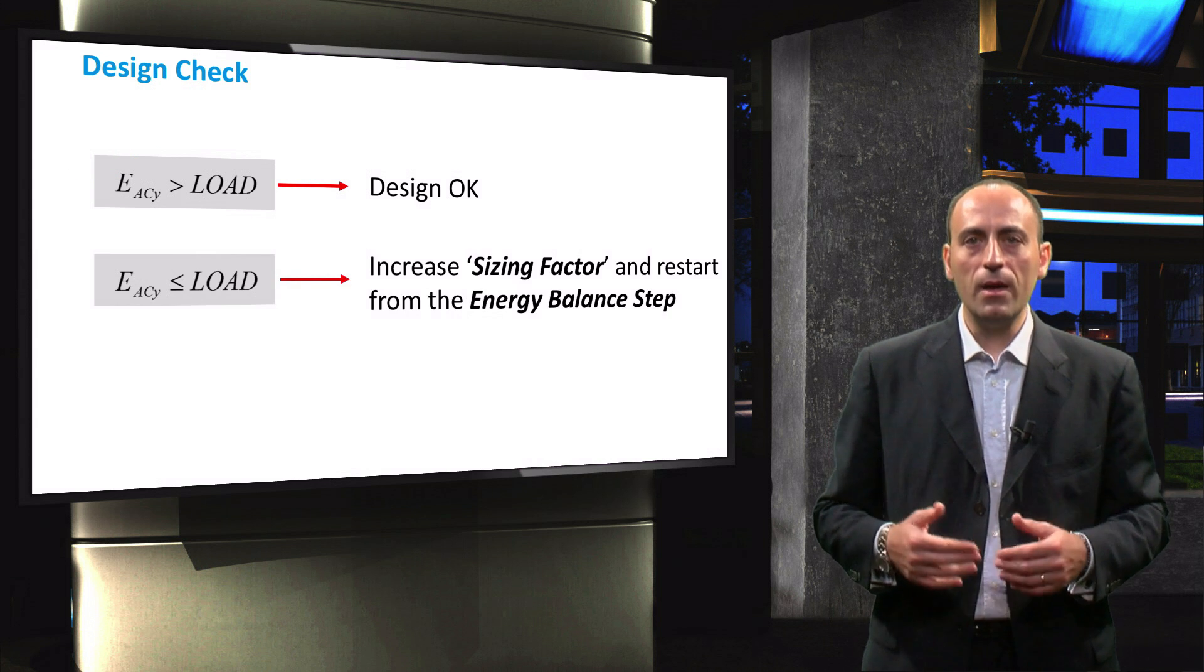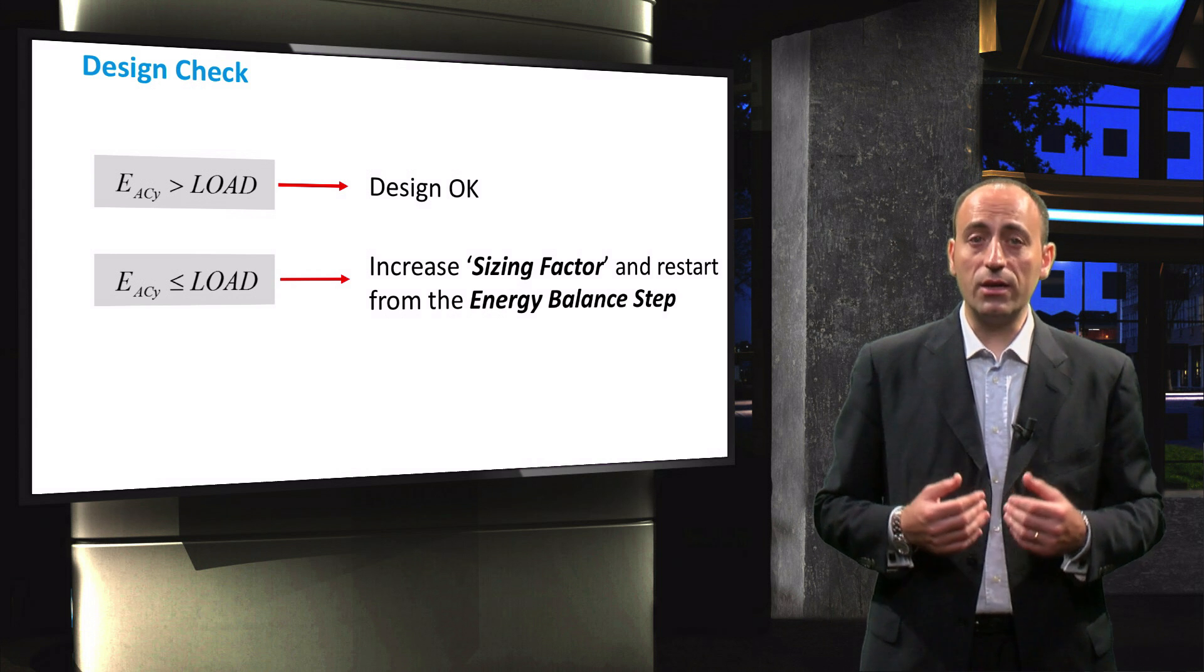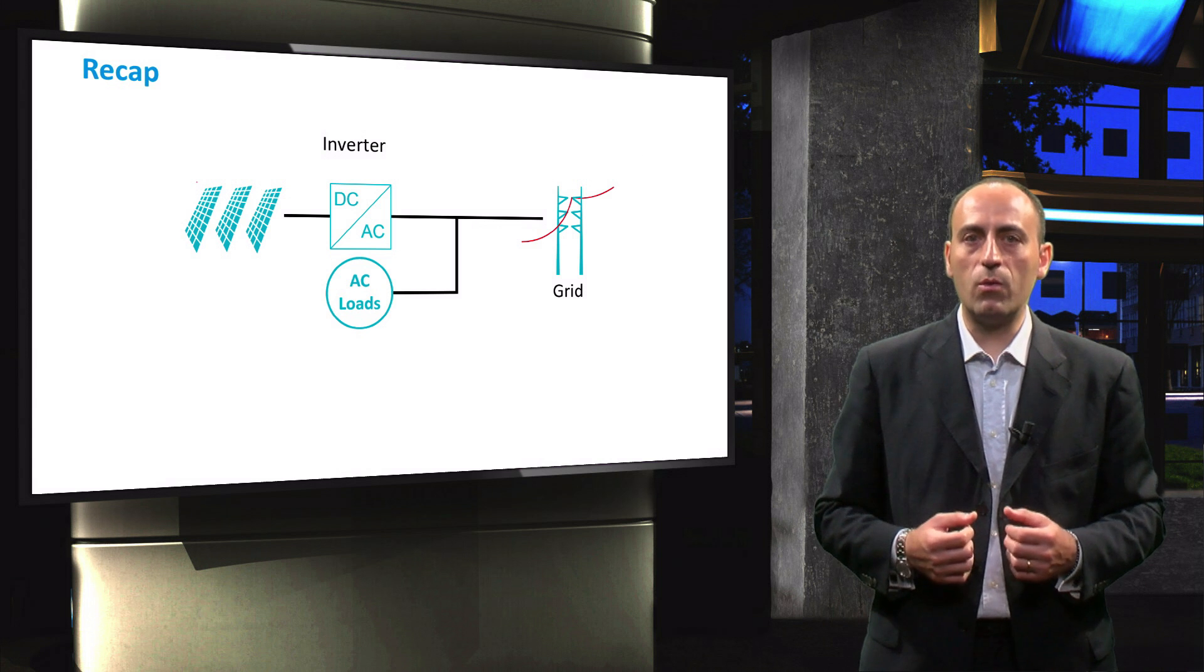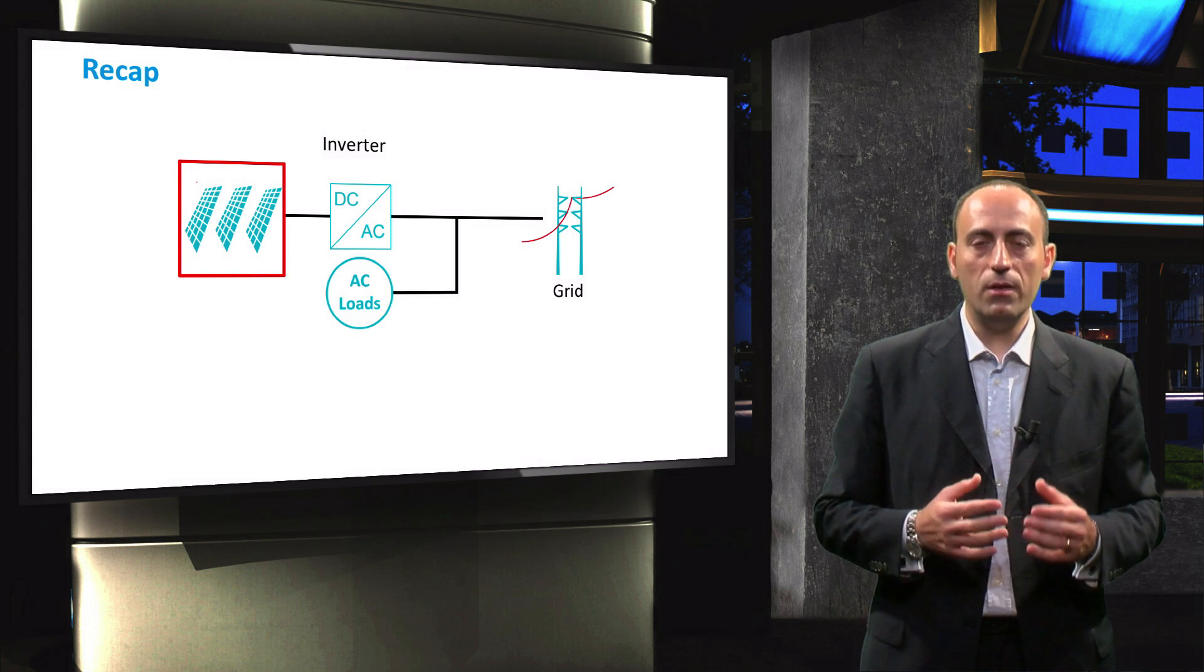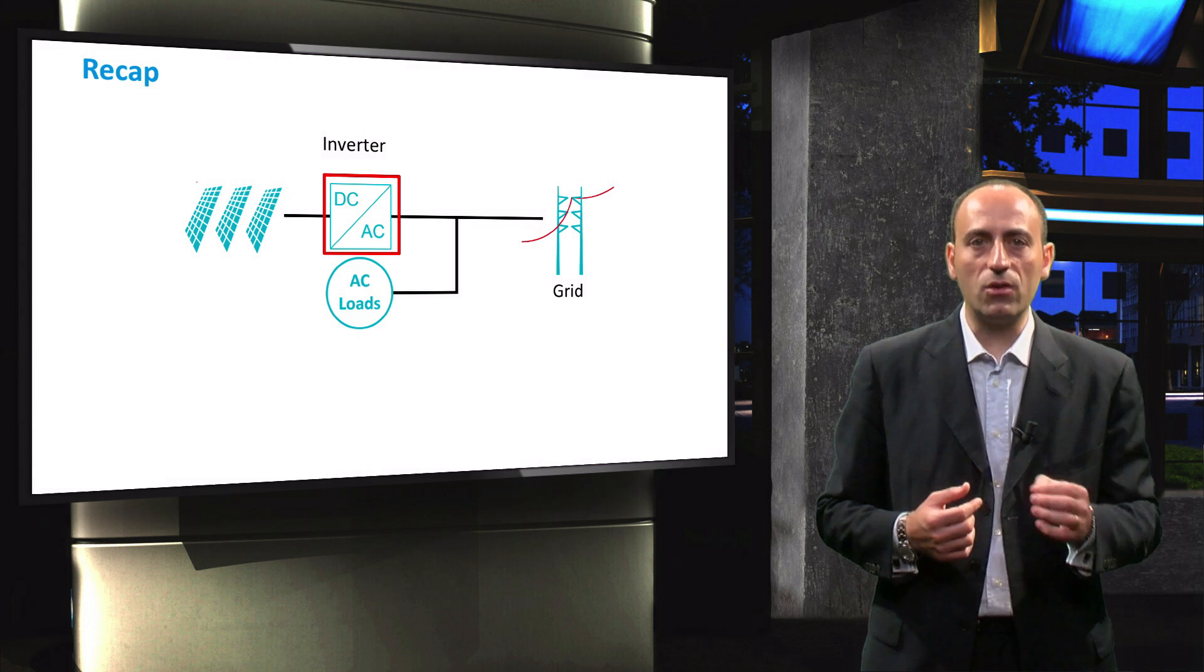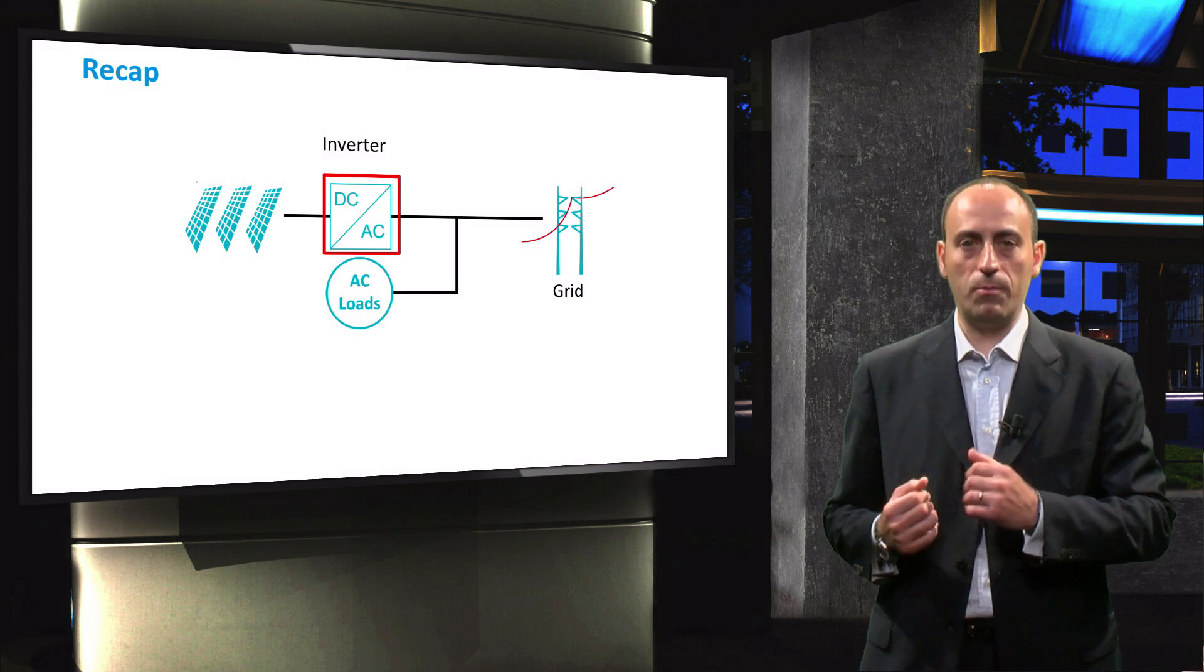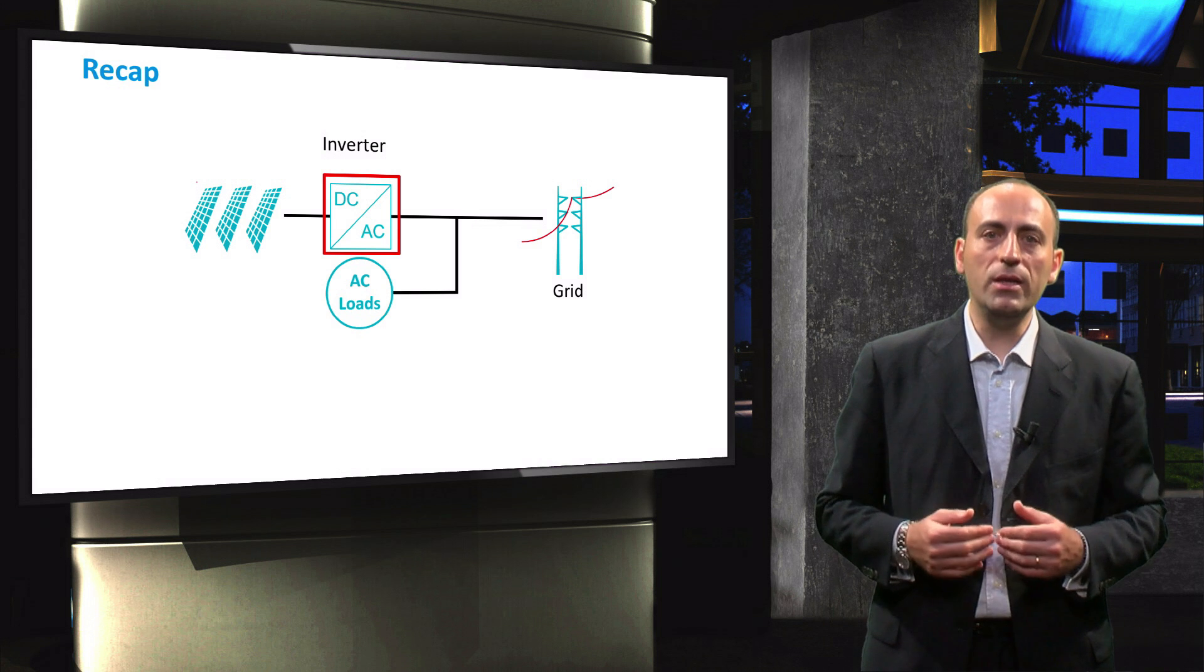In summary, in this video you learned how to design a grid connected PV system. We started by determining the total number of modules required to meet the load demand. Then we selected an inverter and correctly configured the PV module topology based on the inverter parameters. After completing the design, we calculated the performance of the PV system and performed a design check.